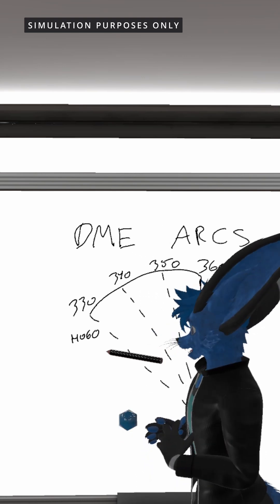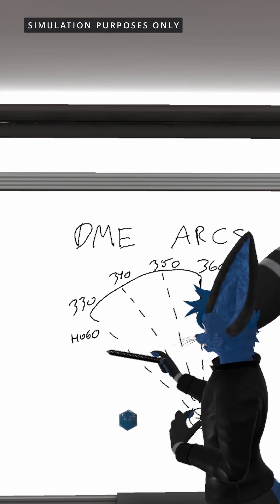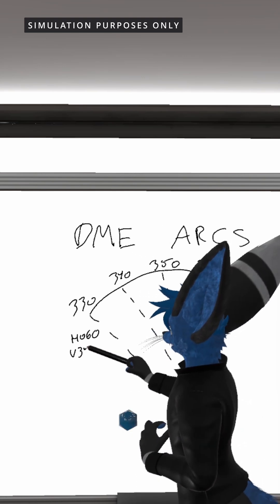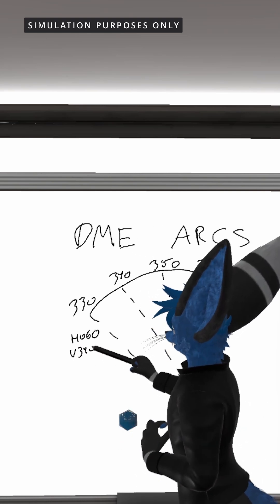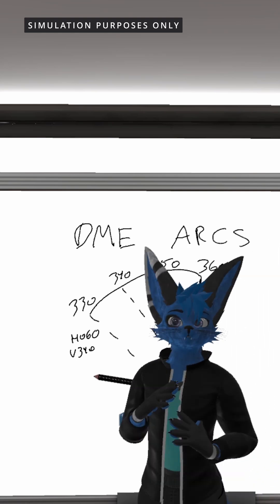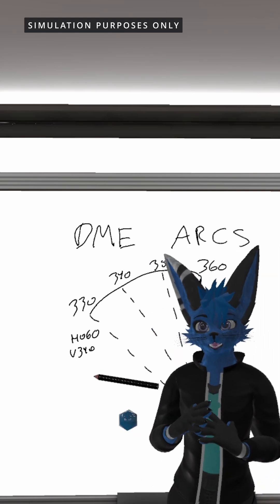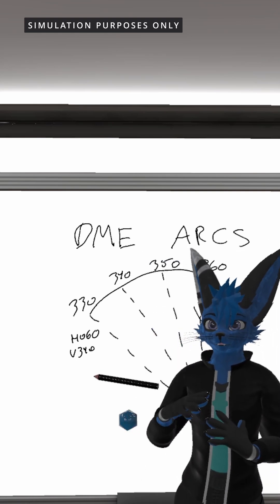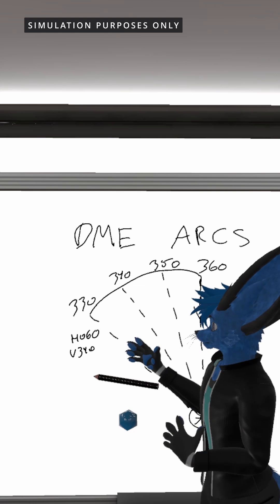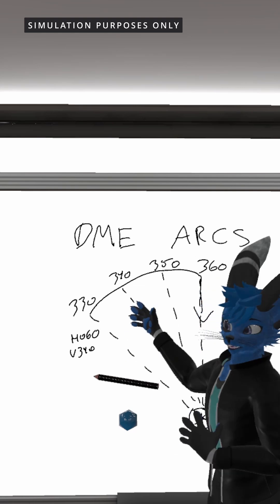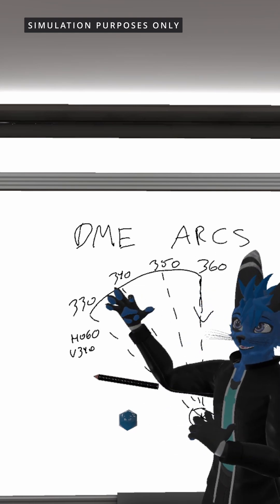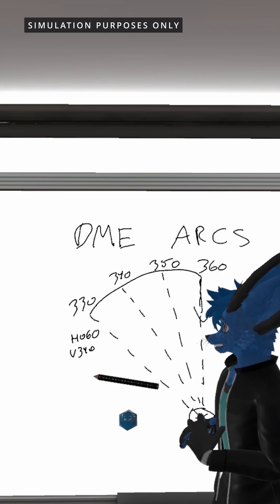Then we're going to take our OBS selector and set that to 340 degrees. When we do this, the needle on the OBS is going to deflect all the way to the right-hand side because now we're going to be tracking the 340 degree radial, which is 10 degrees off course.